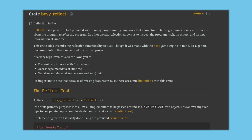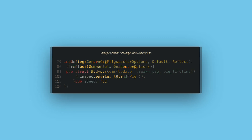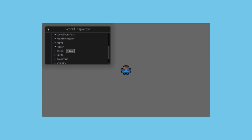Bevy's reflection systems are super cool and worth looking into. Now after adding the derives, we just need to register the type with the app. Most built-in components are already registered, so you only need to do this for your new types. I'll also do this for the pig and the player, and for the player I want to use a feature called inspector options, where I can use attributes to set a minimum value for speed. This is just one of the powerful tools that the inspector offers, and you can really create a powerful editor experience specifically designed for your own game. Now when we run the game, I can edit all of the values on my custom components, and I can double check things when there's a bug or something doesn't work like I think it should.